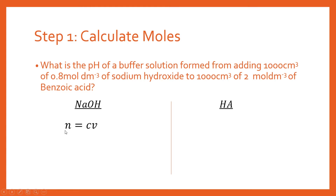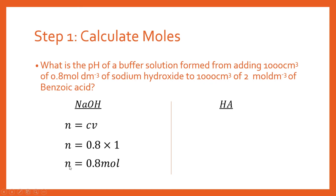We use n = CV, where n is the number of moles, C is concentration, and V is volume. We have to watch out for units — concentration is in mol/dm³ and volume is 1,000 cm³, so we divide by 1,000 to get consistent units. So n = 0.8 × (1000/1000) = 0.8 moles of NaOH.